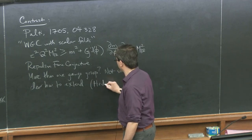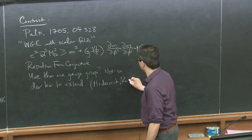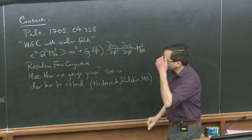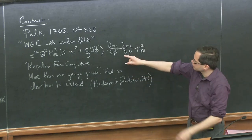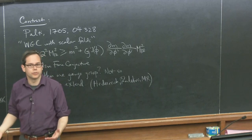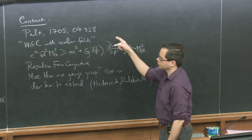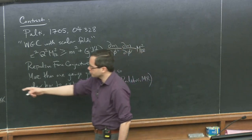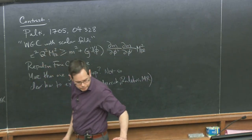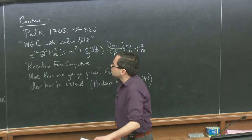There's work in progress that I'm doing with Ben Heidenreich and Tom Rudelius where we're trying to work that out. The interesting thing is that this alternative conjecture and the convex hull conjecture might both be true. But if the particle masses depend on the scalar in a different way than the masses of black holes, these are two different statements.